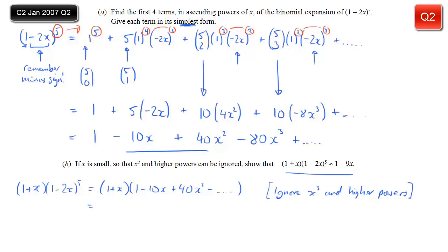A tip to multiply these out is to start with the first term in the first bracket and multiply that by everything in the second bracket: 1 times 1 is 1, 1 times minus 10x is minus 10x, 1 times 40x² gives 40x². Then for the second term x, we write it on the line below and align our terms by powers: x times 1 is x, written under the minus 10x; x times minus 10x is minus 10x², written in the x² column. For more complicated expansions this makes it very easy to simplify things.